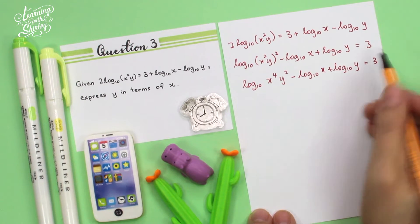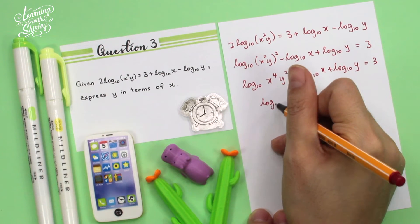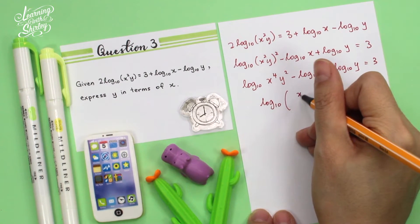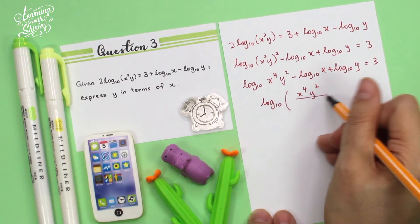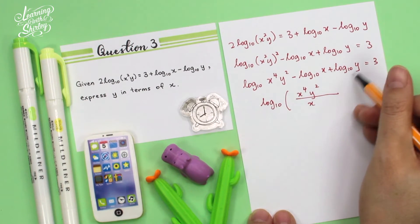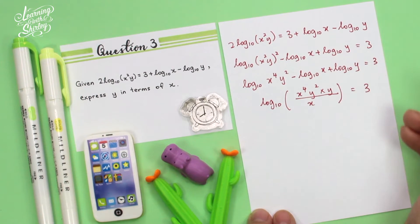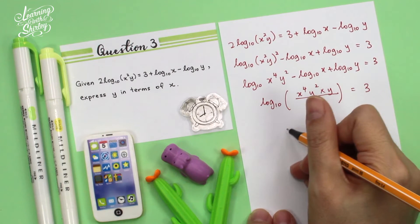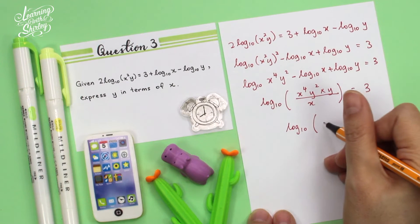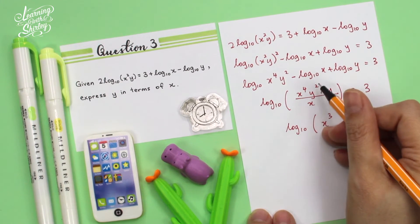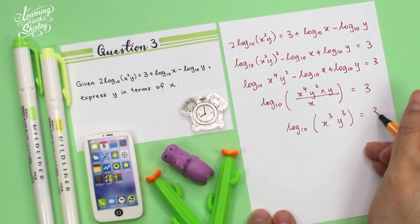And then next, since all the bases for the logs are the same, we can combine under one log. So (x⁴y²), minus log x means divided by x, and then plus log y means times y, equals 3. Okay, then we solve this first. So log of x⁴ divided by x is x³, and y² times y is y³, equals 3.